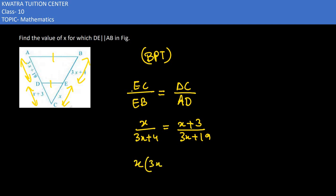x will get multiplied with 3x plus 19, and on the right side 3x plus 4 will get multiplied with x plus 3.